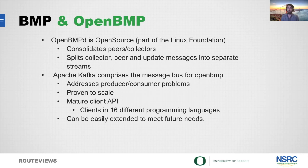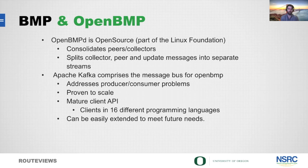Our BMP collection infrastructure is based on a Linux Foundation project called OpenBMPD. It consolidates peers and collectors and is able to split collectors, peers, and update messages into separate streams — very useful if you're only looking for a specific AS or exchange. The backend of the OpenBMPD platform uses Apache Kafka, which comprises the message bus. Kafka does a great job addressing consumer-producer queuing problems, has been proven to scale, has a mature client API, and can be easily extended to meet future needs.